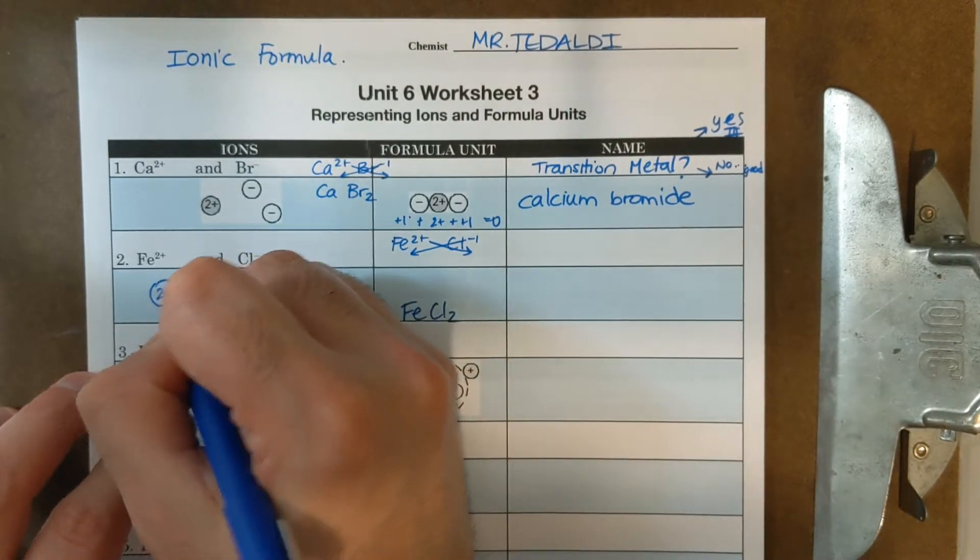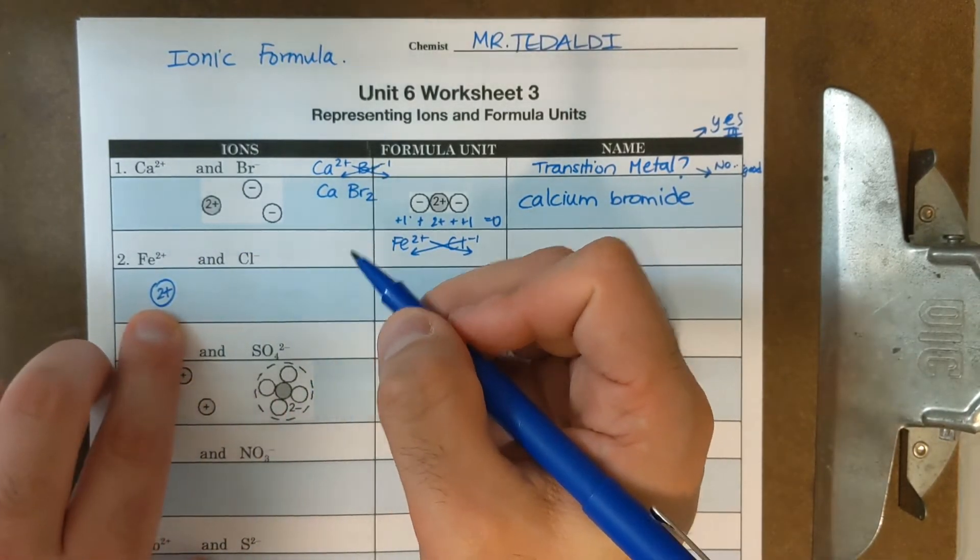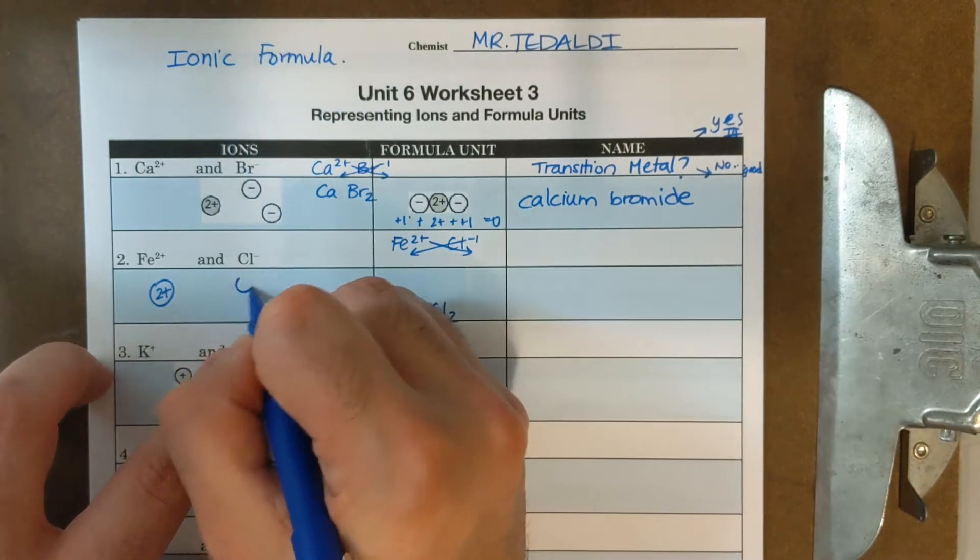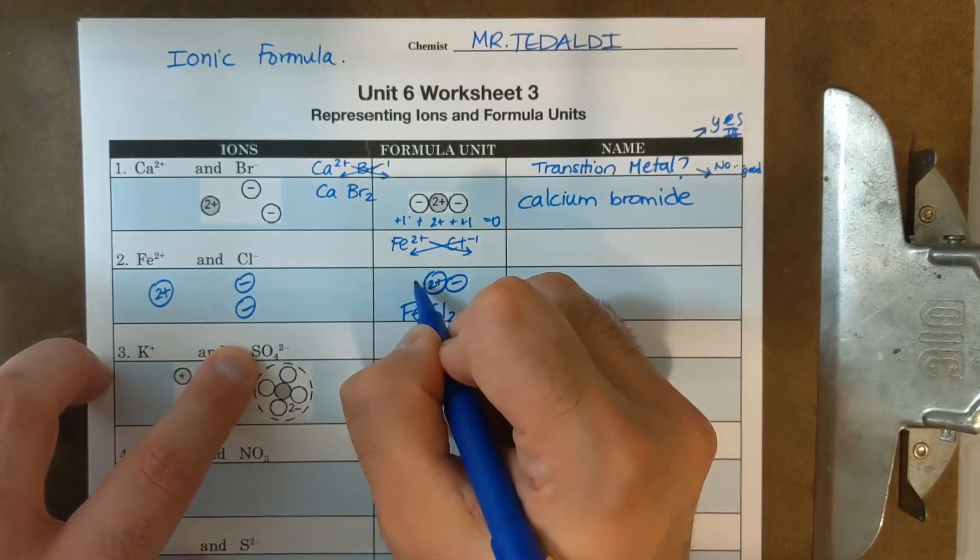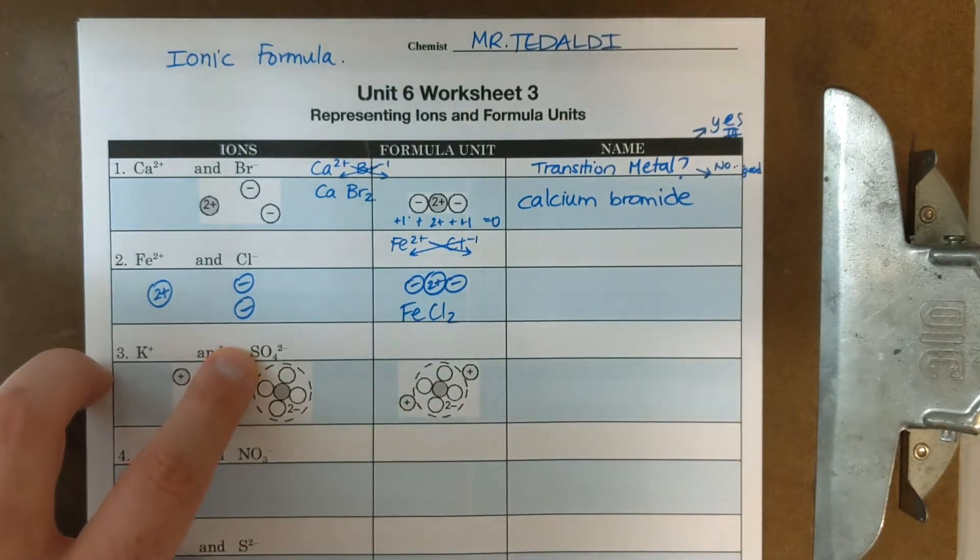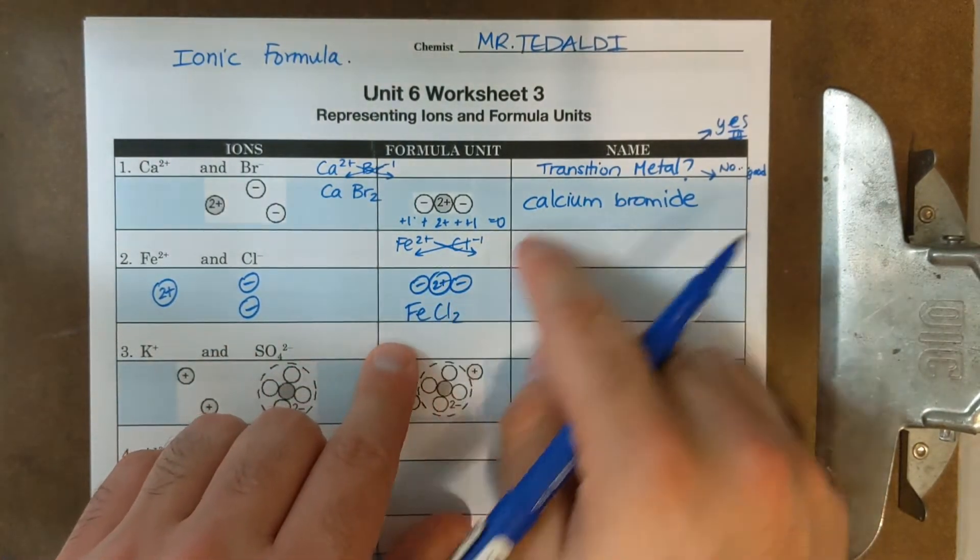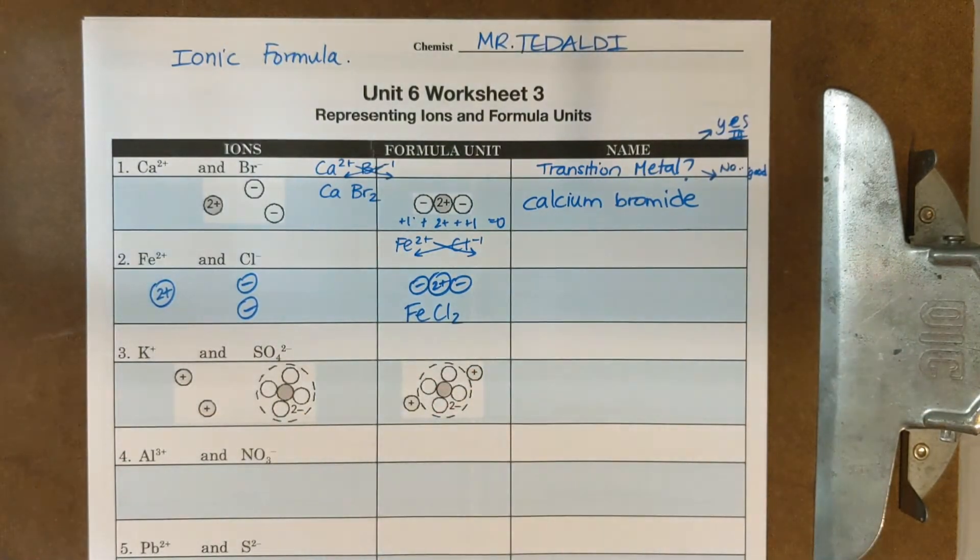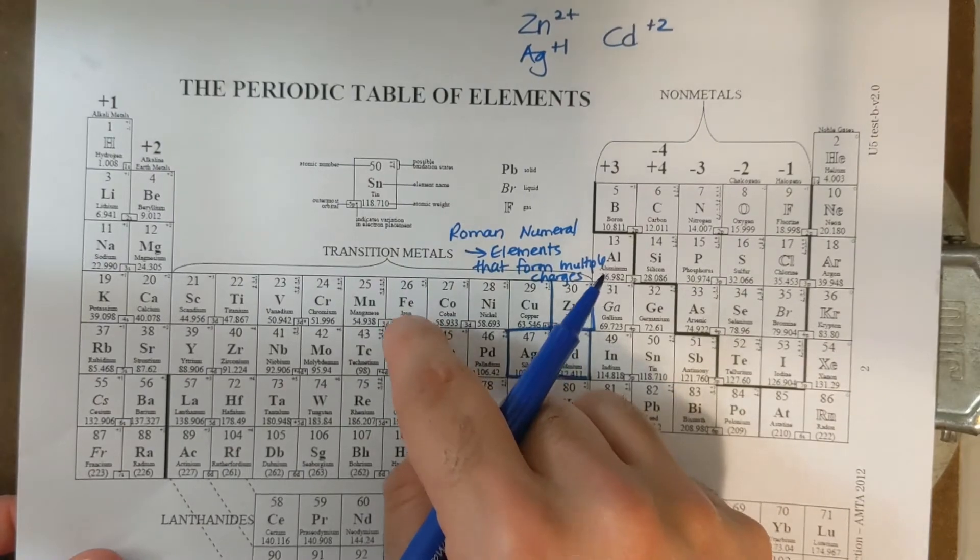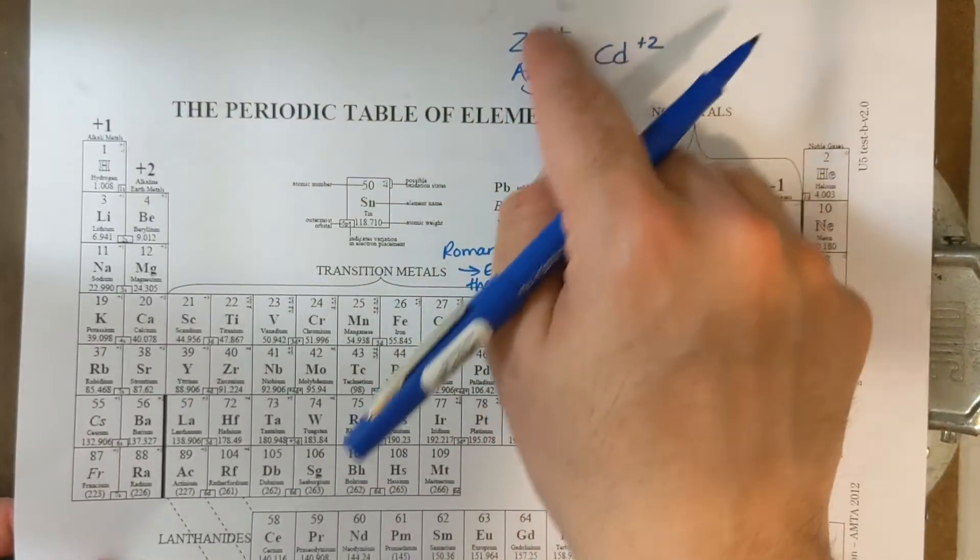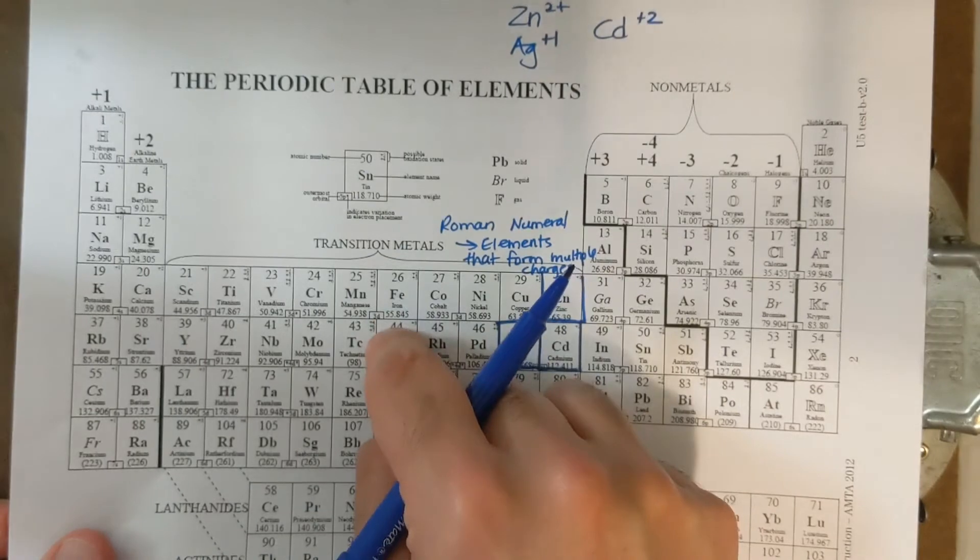If I wanted to draw that, I could do one circle with two plus and I'm going to need two Cl minuses, just like on top here. So I could draw it and do two plus and the two minuses. Now my question is, is the metal a transition metal? If I look at my periodic table, Fe is in the middle. And it's not one of these three exceptions, so since Fe is in the middle, I'm going to need a Roman numeral for its charge.